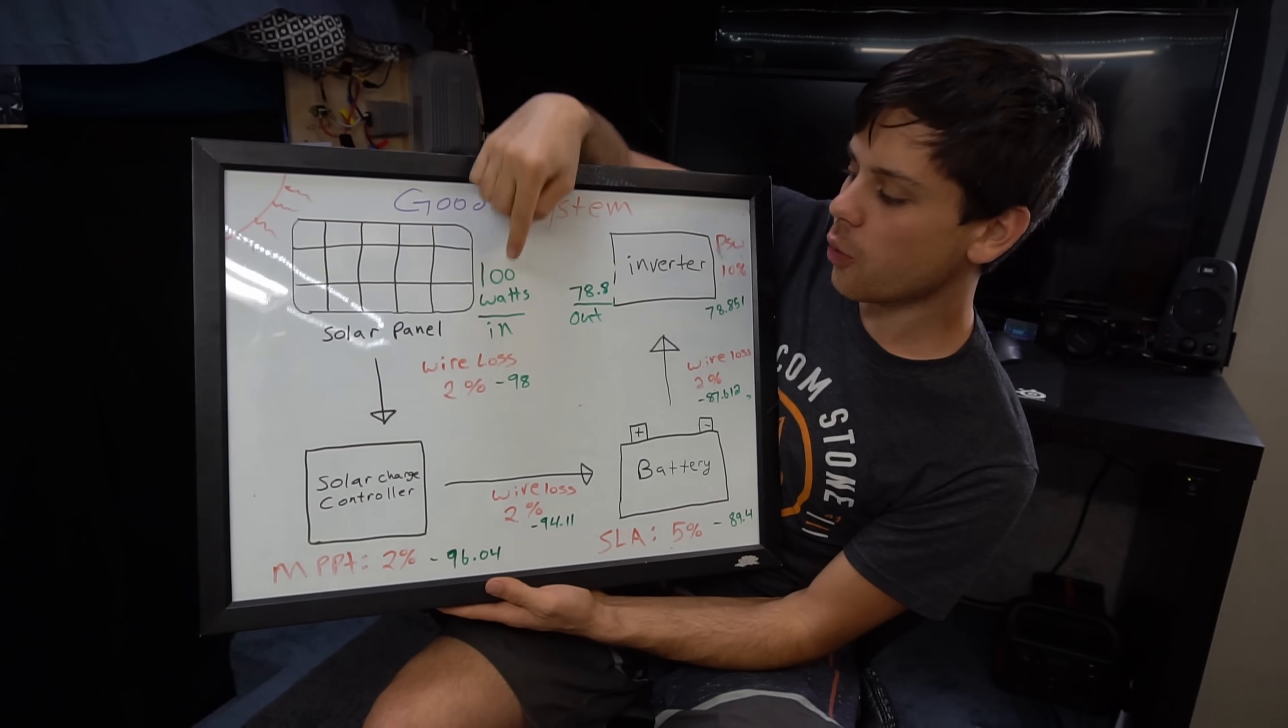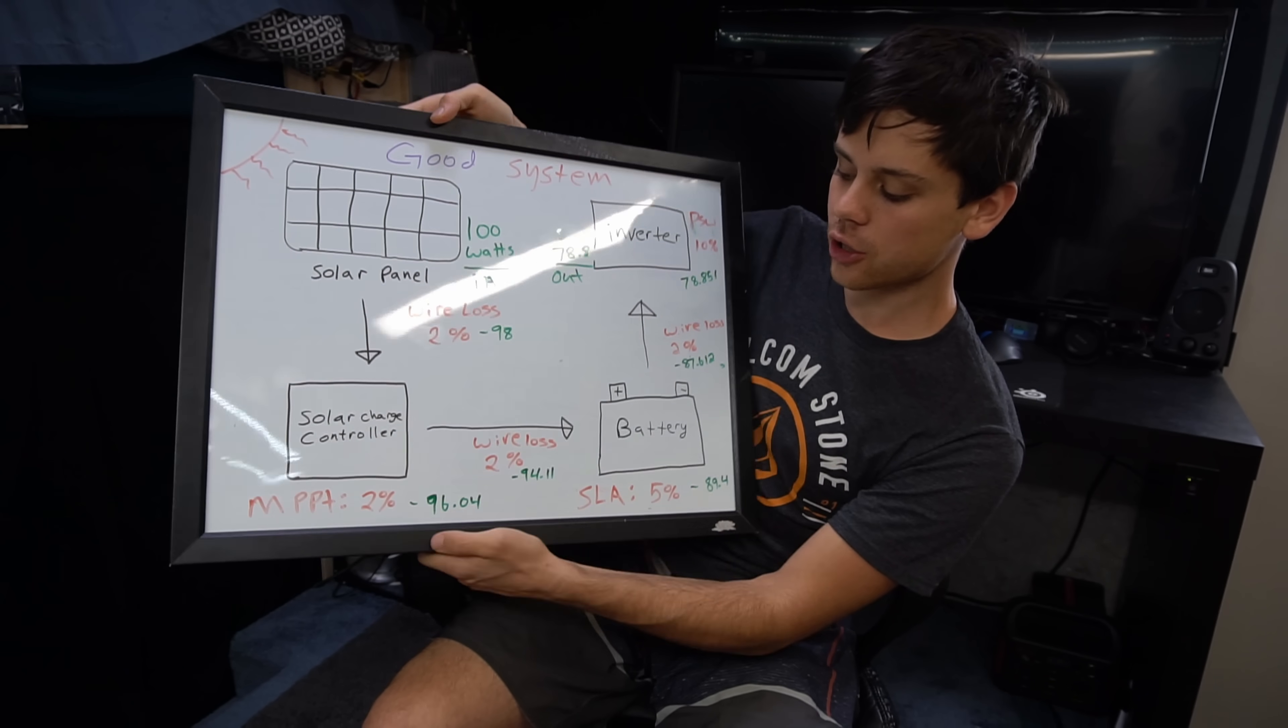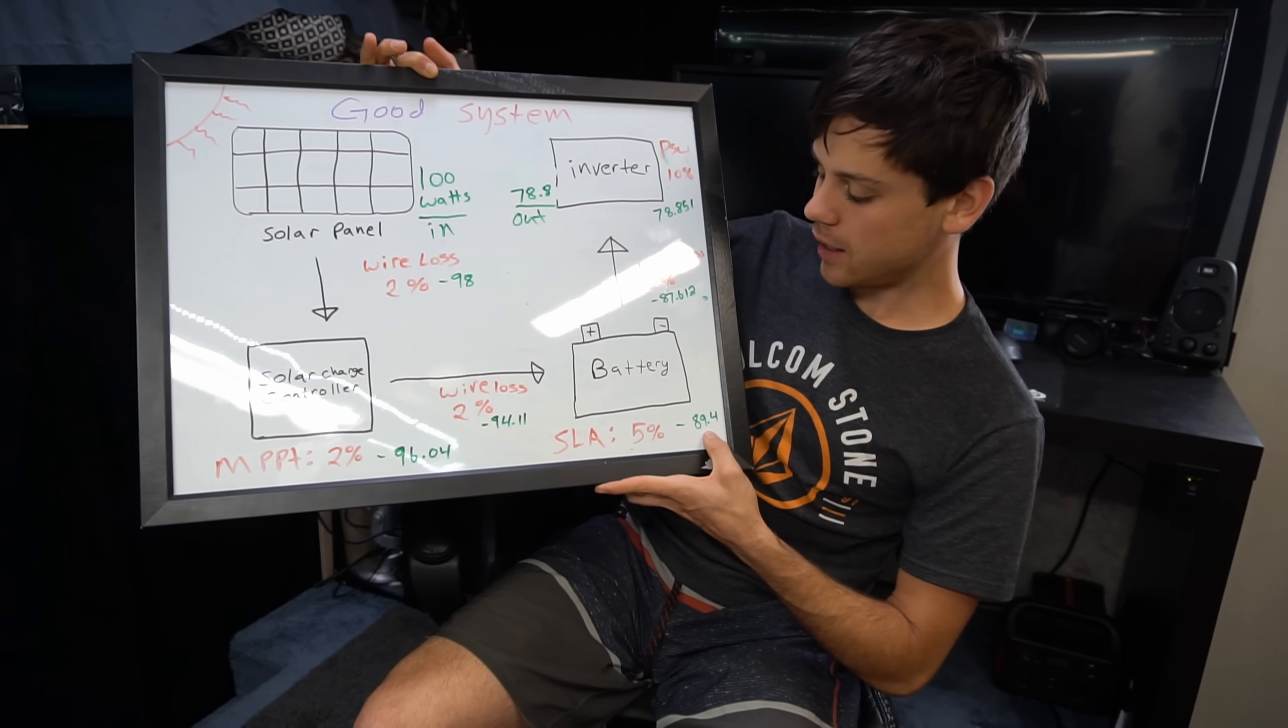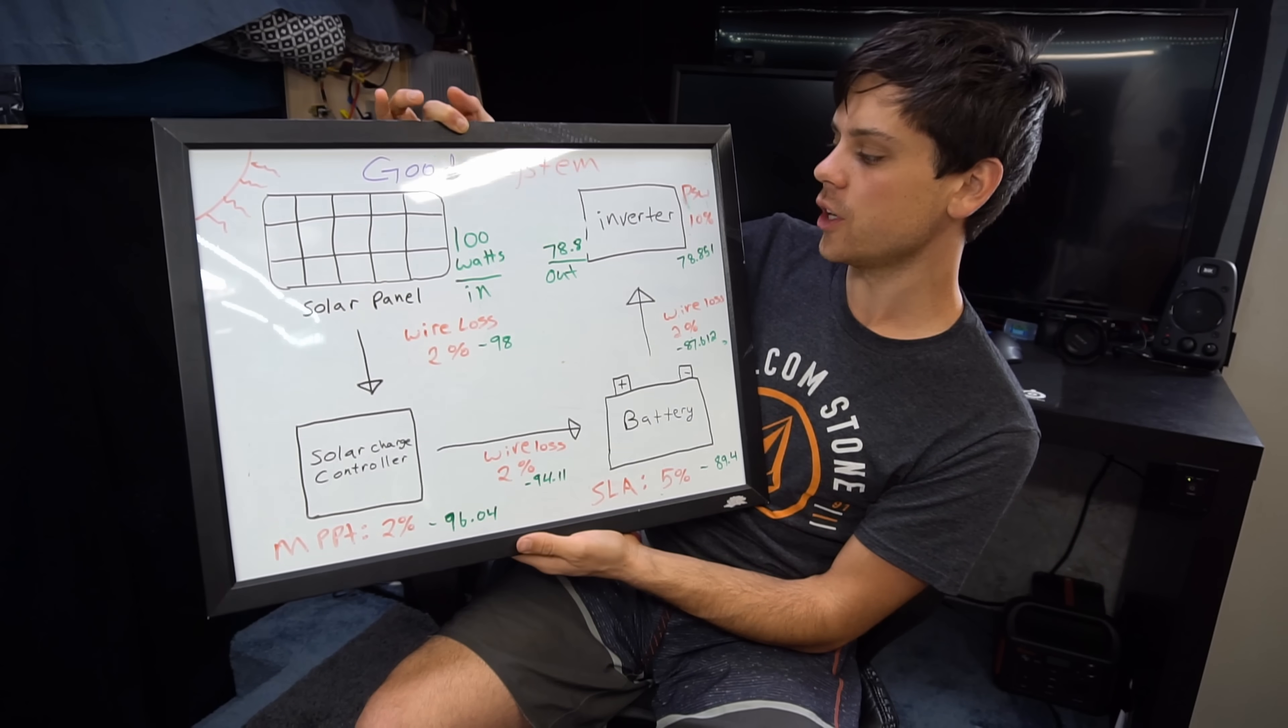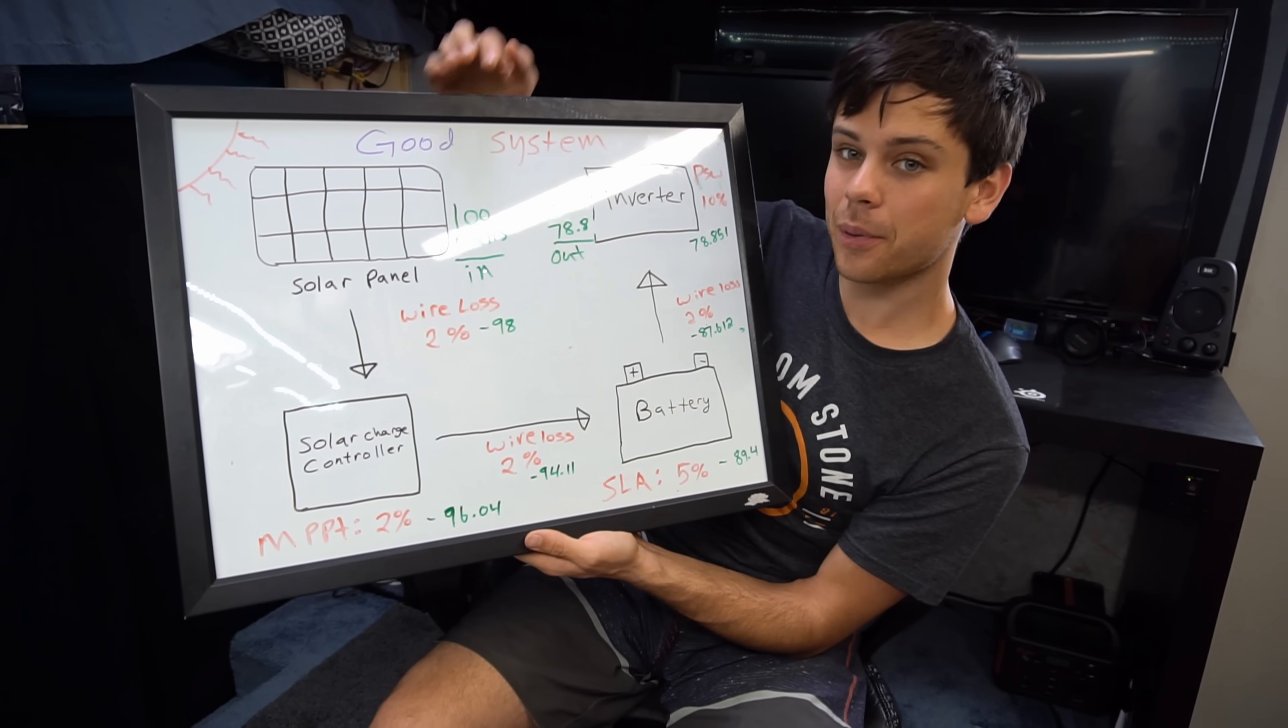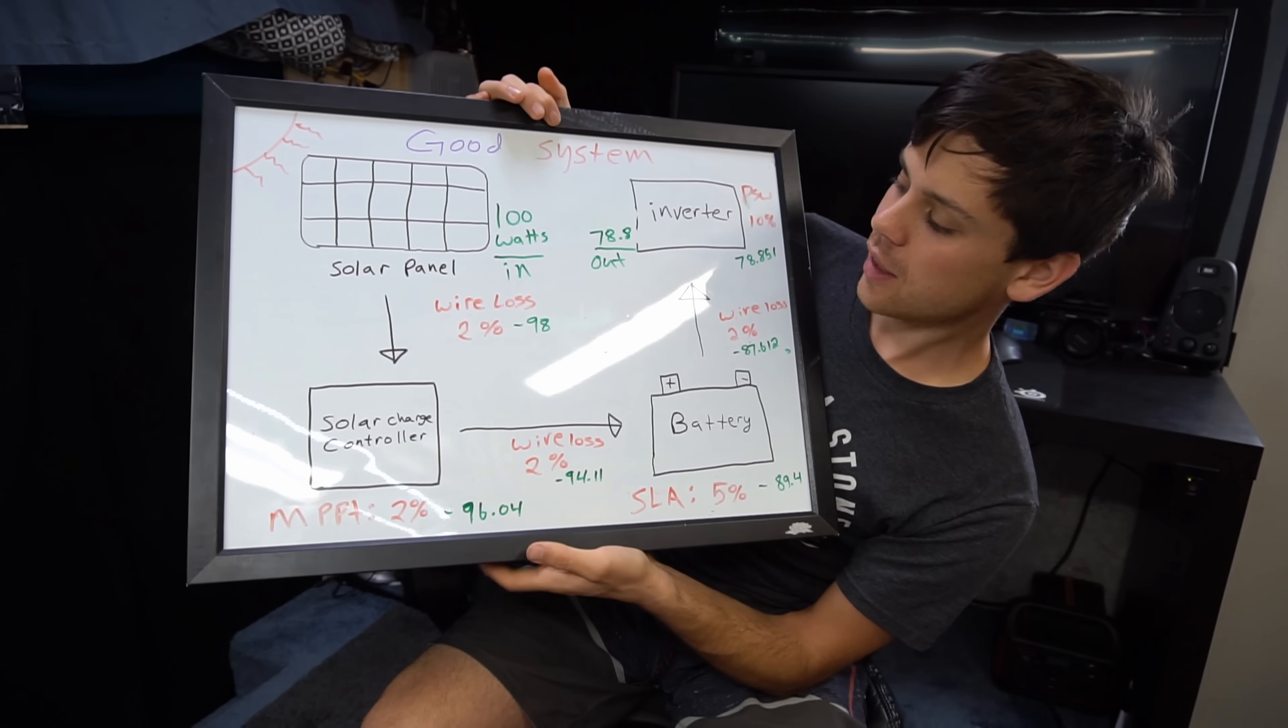Now we calculated it. So we have 100 watts in, wire loss drops it to 98, solar charge controller drops it to 96 watts, wire loss 94, SLA battery 89 and then 87 watts, 78 after it comes out of the inverter and we don't have that 30 percent loss for induction loads. So 100 watts goes in and almost 80 percent comes out. Do you see that? That is huge. That is amazing.